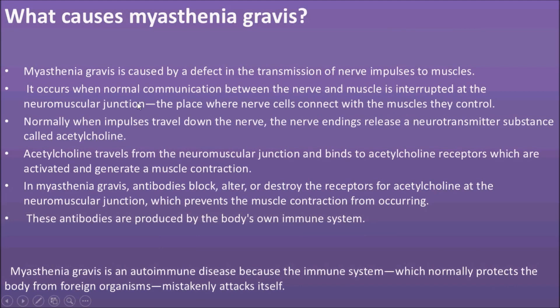Myasthenia Gravis occurs when normal communication between nerve and muscle is interrupted at the neuromuscular junction — the place where nerve cells connect with the muscles they control. Normally, when an impulse travels down the nerve, the nerve endings release a neurotransmitter substance called acetylcholine. The acetylcholine travels across the neuromuscular junction and binds to acetylcholine receptors, which are activated and generate a muscle contraction.